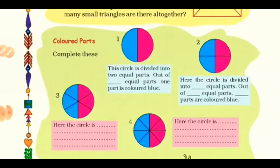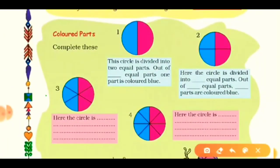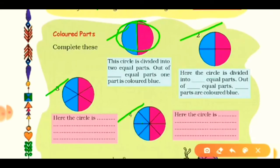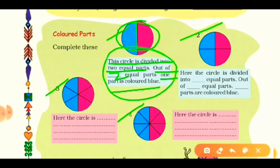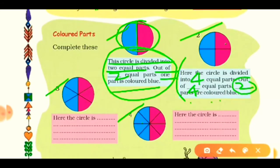Now topic three: Colored Part. Complete questions three and four. Check the first two examples: a circle is divided into two equal parts and one part is colored. Complete the sentence accordingly. For the second example, the circle is divided into four equal parts and two parts are colored blue. Fill in the sentences in the same way.